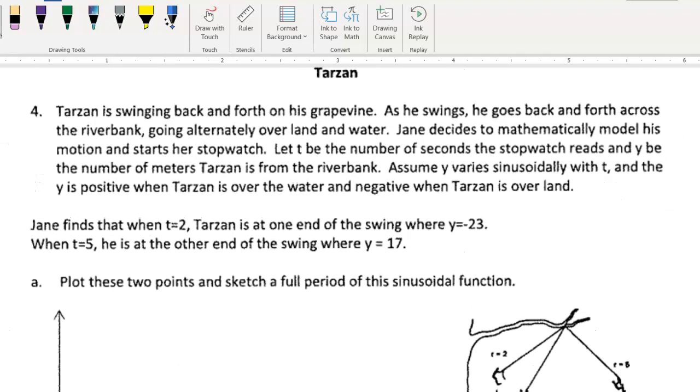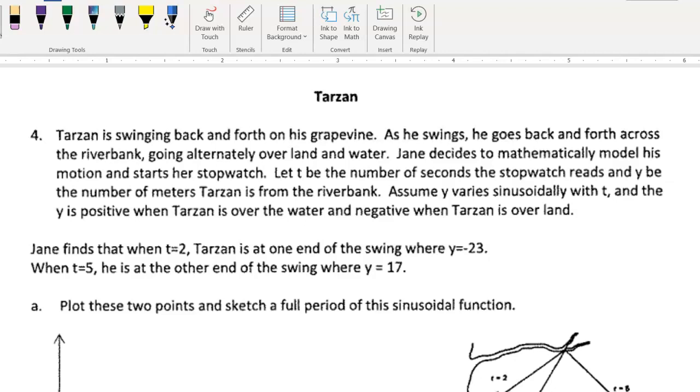So this is the Tarzan example. It says Tarzan is swinging back and forth in his grapevine. As he swings, he goes back and forth across the riverbank, going alternately over land and water. Jane decides to mathematically model his motion and starts her stopwatch. Let T be the number of seconds the stopwatch reads and Y be the number of meters Tarzan is from the bank. Assume Y varies sinusoidally, meaning it follows the shape of a sine graph with T, and Y is positive when Tarzan is over the water and negative when Tarzan is over land.